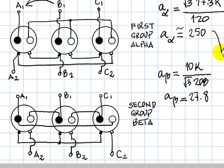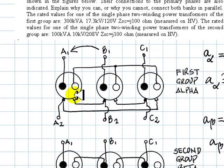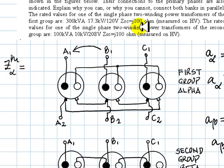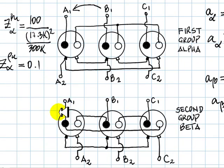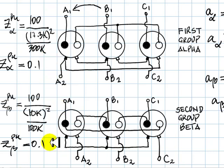They have different transformation ratios and should not be connected in parallel. However, let's also check the short-circuit impedances. The per-unit short-circuit impedance for Group Alpha is j100 divided by the base impedance on the high voltage side, giving 0.1 per unit. The per-unit short-circuit impedances of both banks turn out to be the same. The two banks meet two out of the three conditions to be connected in parallel, but these are AND conditions — if one is not met, they should not be connected in parallel.